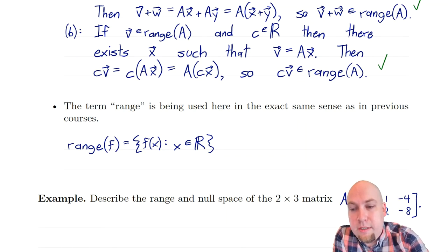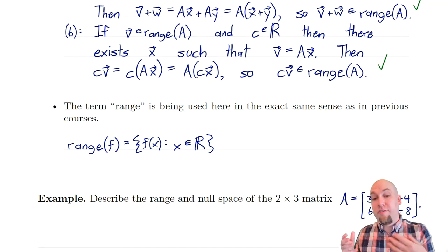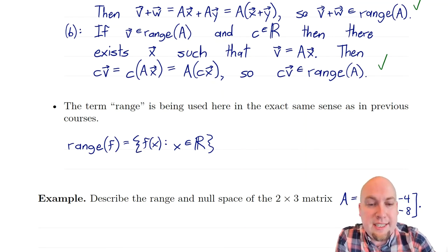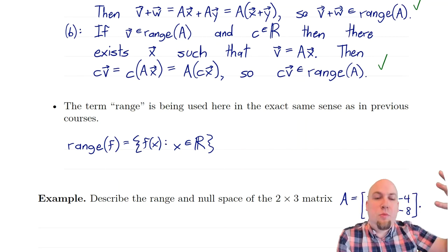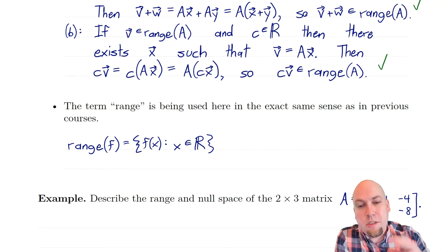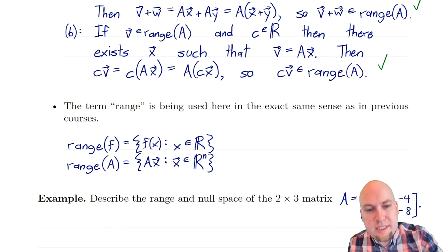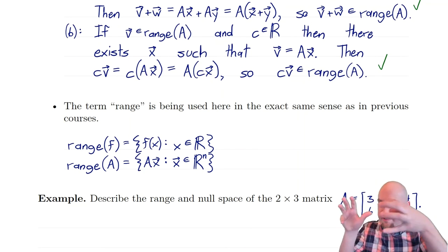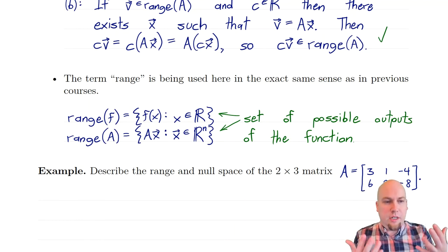Before computing an example, note that we're using the word 'range' in the same sense as in previous courses. For single-variable functions, the range is the set of all possible outputs — the set of f(x) values as x varies over all real numbers. For a matrix, it's the exact same idea but with different input and output spaces: the range is the set of all outputs A times x as x varies over all possible input vectors.